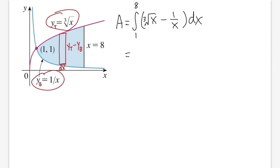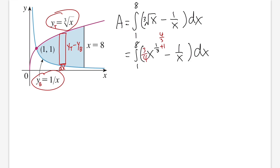For the cube root of x, that's x to the 1/3 power. Do not write 1 over x as x to the negative 1 — that's a special integral that gives a natural log. For the cube root term, add one to the power to get 4/3, then divide by the new power, giving 3/4. So the first part is 3/4 x to the 4/3. The integral of 1 over x is the natural log of x.